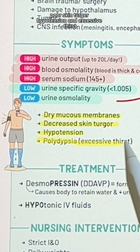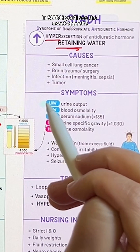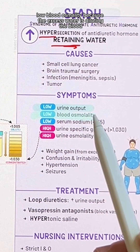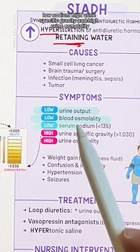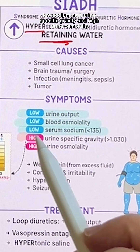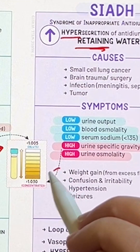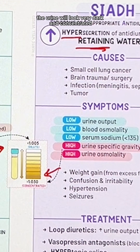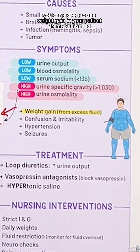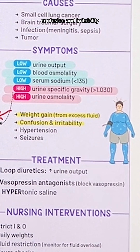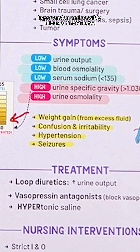In SIADH, you'll see the exact opposite: low urine output, low blood osmolality because the excess water is diluting the blood, low sodium, high urine-specific gravity, and high urine osmolality. So the urine will look very dark and concentrated. You can expect to see weight gain in your patient from excess fluid, confusion and irritability, hypertension, and possibly seizures if not treated.